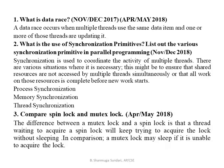Third question: compare spin lock and mutex lock. The difference is that a mutex lock may sleep until it can acquire the lock — the thread is put to sleep. But a spin lock, without sleeping, keeps on trying. That is the difference between spin lock and mutex lock.